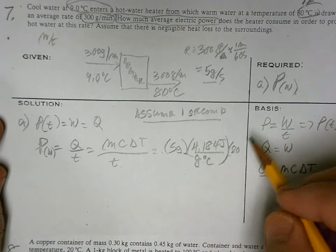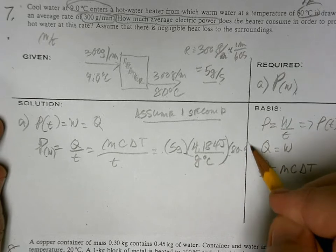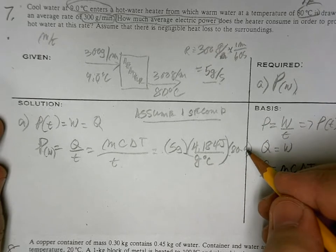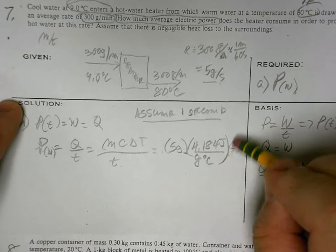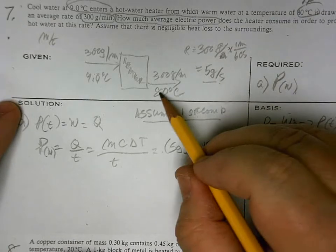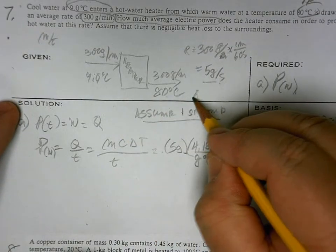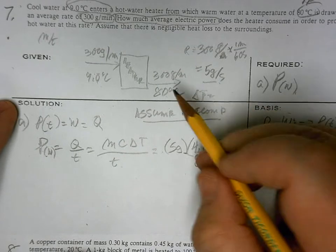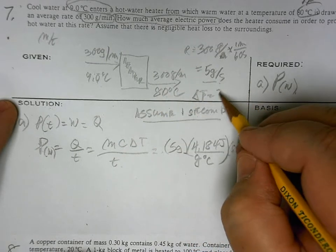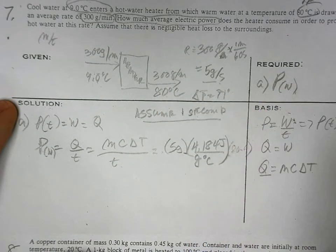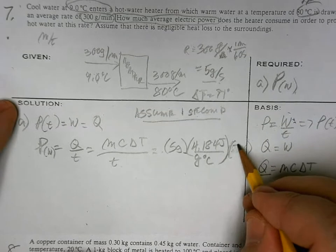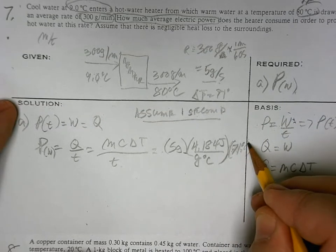80 minus 9, delta T is 71 degrees. So let's write that, 71 degrees centigrade. Great, and you see, cancel, cancel, cancel, we end up with.